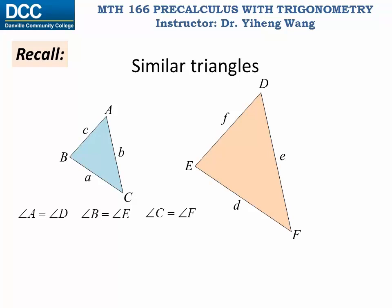So these two triangles have the same angles, and they are known as similar triangles, denoted by this symbol right here. And if they are similar triangles, there are certain properties. The most important property is that the ratio of any two corresponding sides in the first and second triangle must always be the same. In other words, the ratio of a and d equals the ratio between b and e, and that equals the ratio between c and f.